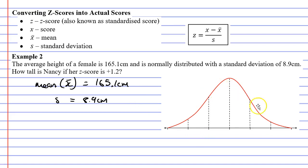Now when we look at our bell curve here, the peak here in the middle is our mean, which is 165.1. This has a z-score of 0.